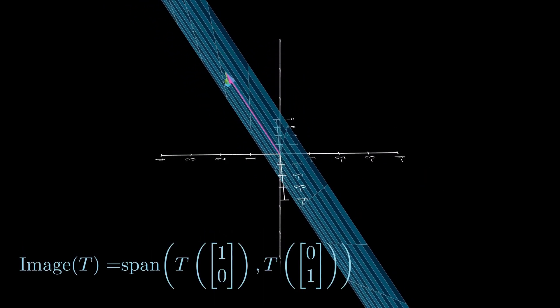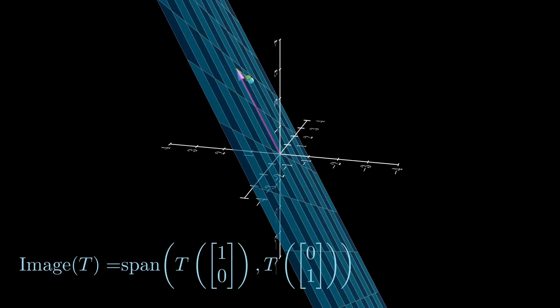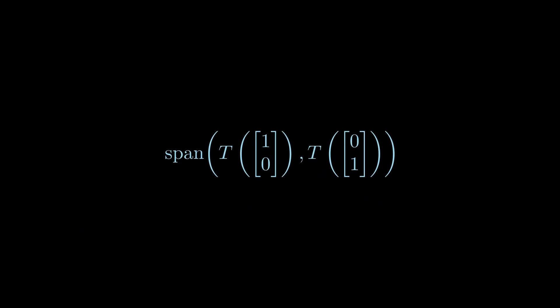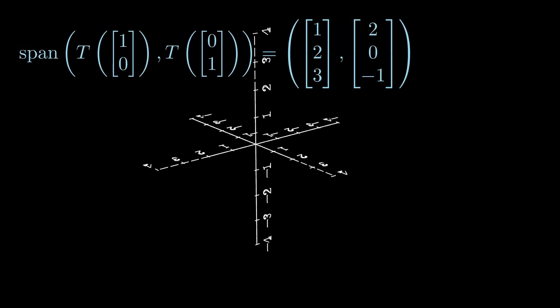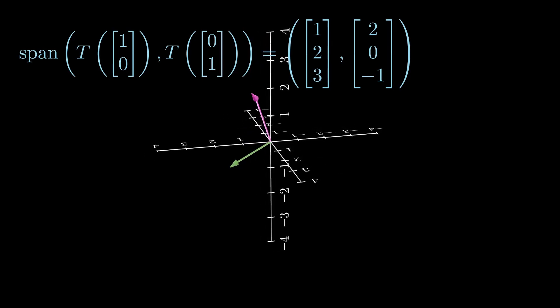And to deeply understand this question, we must understand what the span of two vectors in 3D can be. It can be a plane as we've seen with our example when we assign the bases like this.